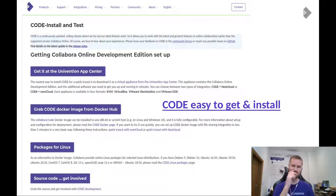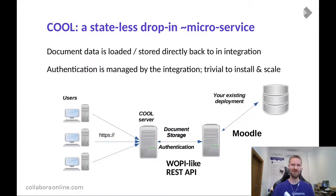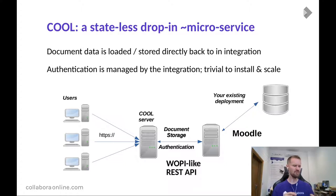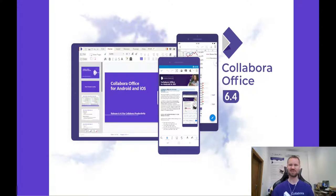Everything you need is there — code is easy to get and easy to install. You can download it through the Univention App Center, Docker images from Docker Hub, lots of packages, or build from source code. We provide essentially a stateless drop-in microservice. It's powerful, but it's not complicated — we save all the document data back to the back-end integration and rely on authentication coming from that back end. It's a simple WAPI-like API that allows us to plug into all those integrations, making it trivial to install and scale.